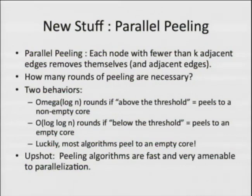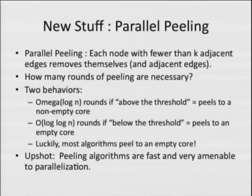Some newer stuff out on the archive: parallel peeling. The idea is you've got a random graph or hypergraph. While there's a node with degree less than K, it can remove itself and adjacent edges and continue. I've been describing that as a sequential process, but there's no reason you couldn't parallelize it — if you have a thread for each vertex, vertices can each individually look at themselves and say, 'I've got too few edges, I'm going to remove myself,' all happening in parallel. The first high-level question is: how many rounds of peeling are necessary if nodes do this in parallel?